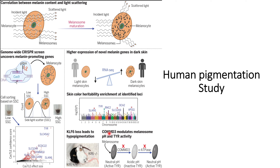They also performed a knockout of COMMD3, which reduced melanosome formation by changing the pH of the melanosome. Normally, the melanosome pH is neutral, and this neutral pH activates TYR. However, when COMMD3 is knocked down, it leads to acidic pH, which inactivates TYR. This activity can be restored by using a chemical compound — specifically, a V-ATPase inhibitor — to restore the pH to neutral, which again activates TYR.